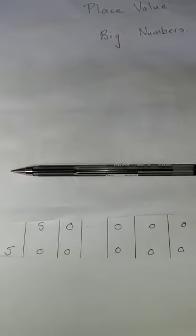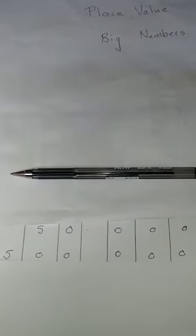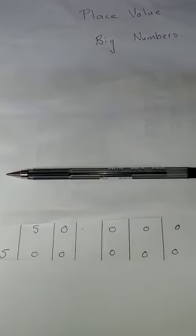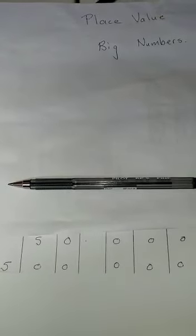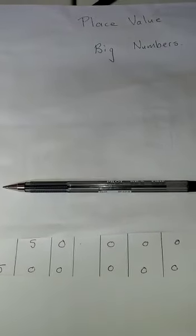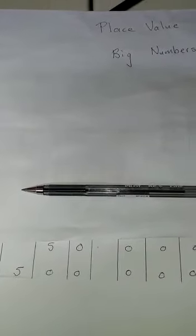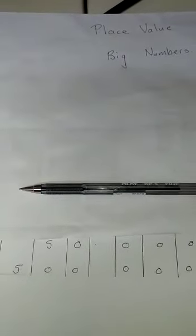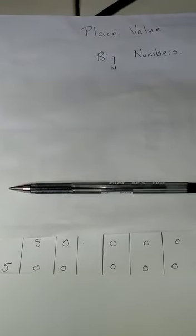Remember to group the numbers in groups of three. So the top number there is fifty thousand, the second one is five hundred thousand.